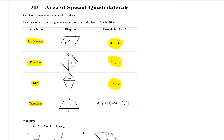The last shape we're going to look at today is a trapezium. A trapezium is any quadrilateral that has a pair of parallel sides. We call the parallel sides a and b, and h is the perpendicular height that goes between the two parallel sides. The formula I prefer to use is: area equals h over 2, bracket a plus b, close bracket.